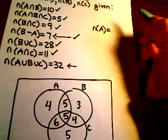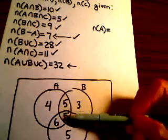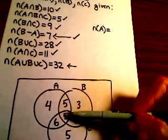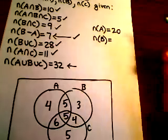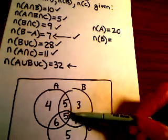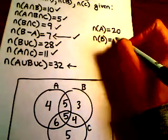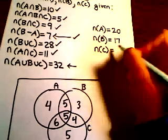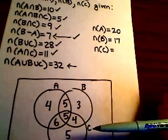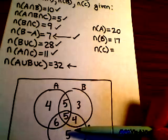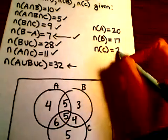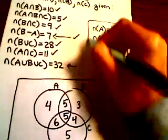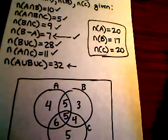So to go back and answer the original question, the number of elements in A is going to be, if we just add this up, we've got 4, 6, 5, and 5. That's going to be 20. And the number of elements in B is 10 and then 7, so 17. And the number of elements in C, cardinal number here, is we have 10 and 10, so 20. So there's the answer on this one.